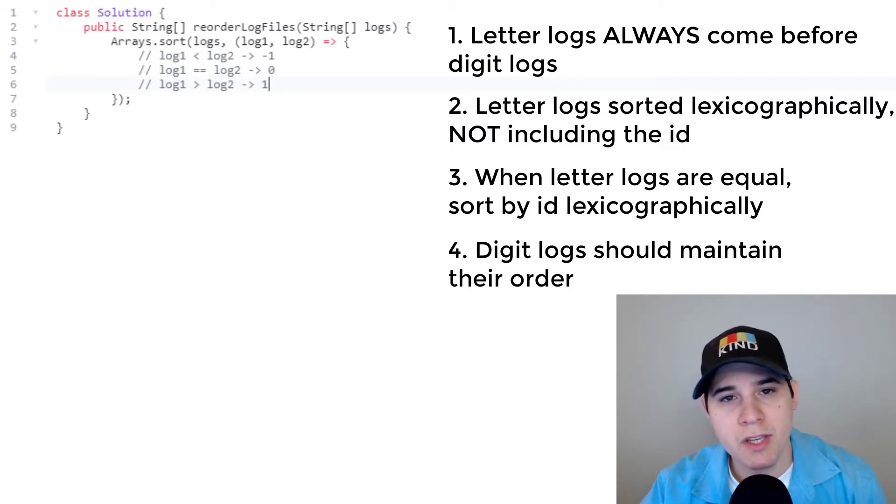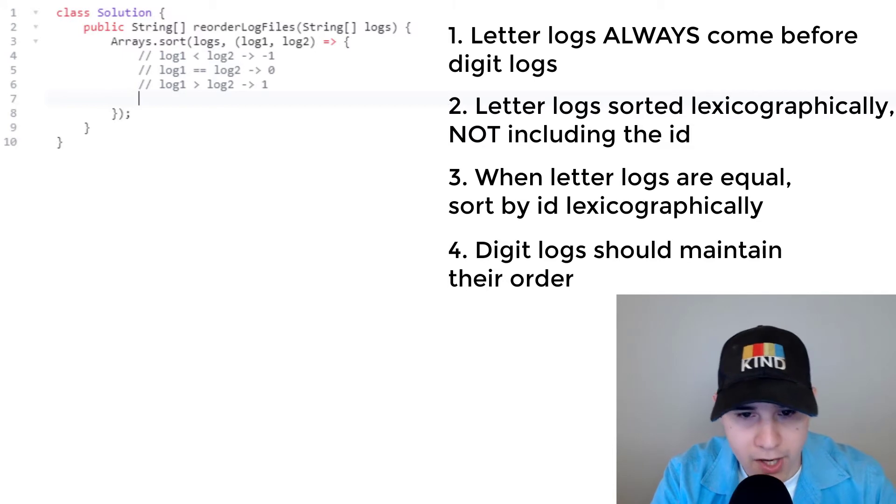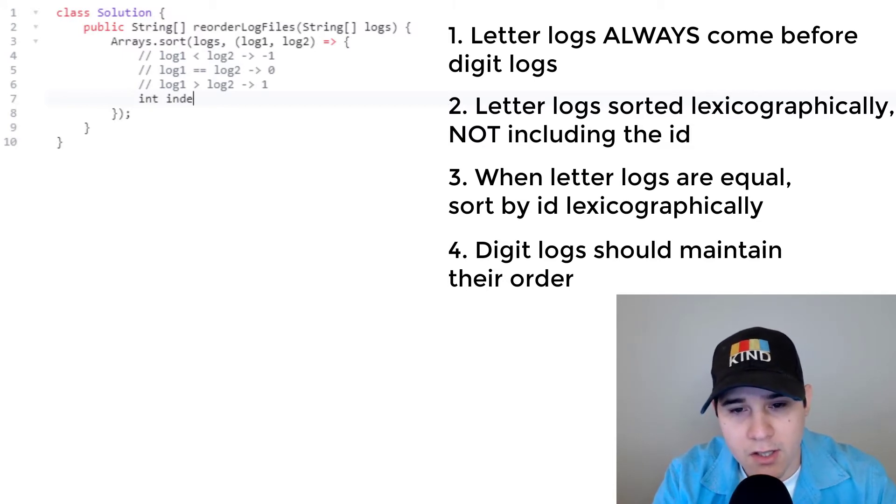So the first thing we need to do is we need to extract the identifiers of both of our logs, and then the individual log portion. So to do that, we need to get the first space in that string. So to do that, we can say int index one, we'll say log one dot index of the space, and this will grab the very first one. So even if there's 50 other spaces in our string, it'll always get the index of the very first one.